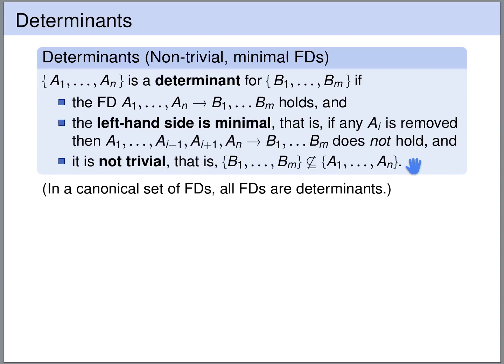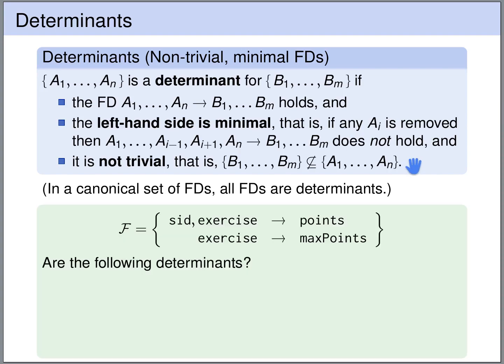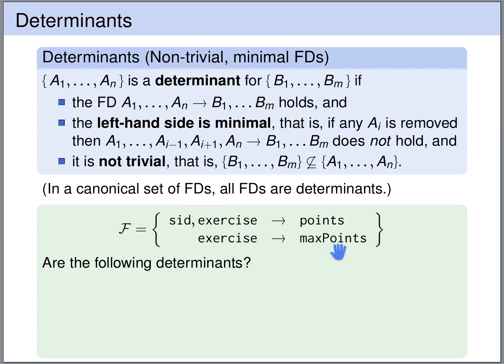Let's have a look at some examples. We have two functional dependencies: the student ID and the exercise number uniquely determine the number of points that the student has obtained, and the exercise number uniquely determines the maximum number of points obtainable for that exercise.